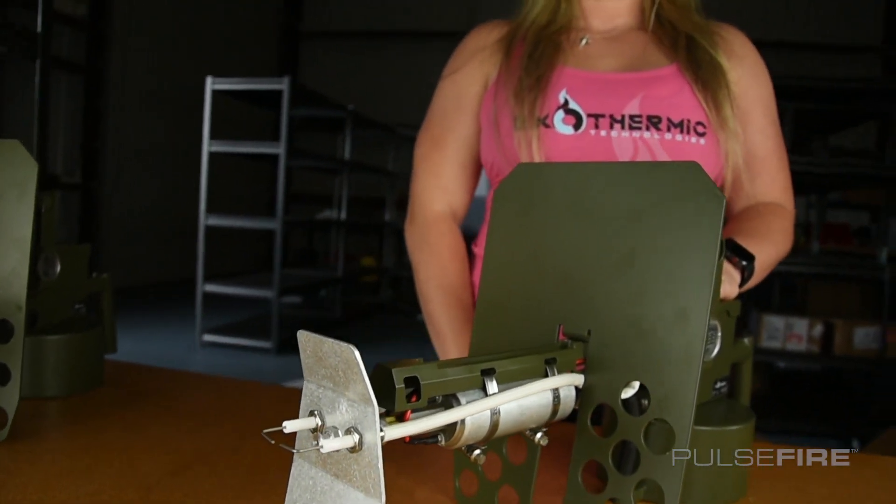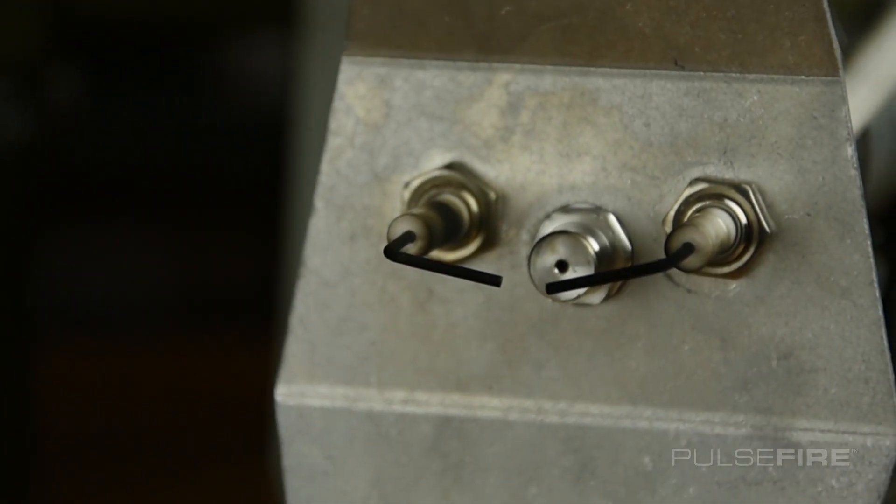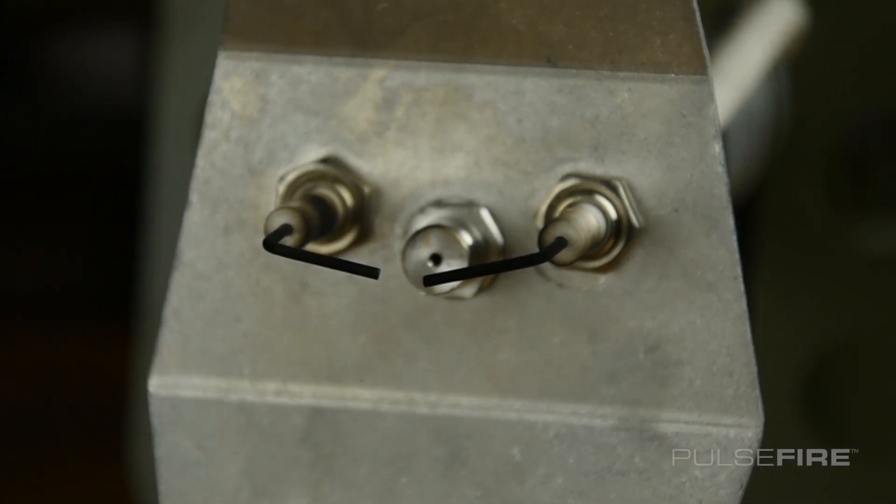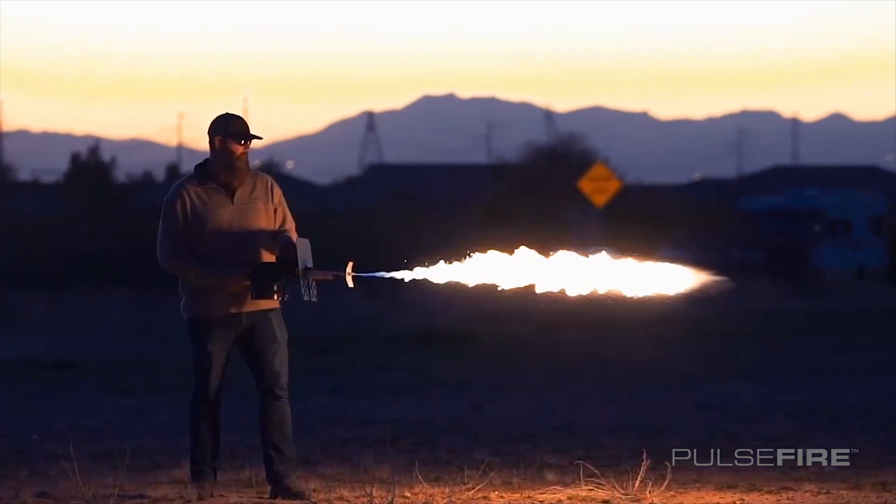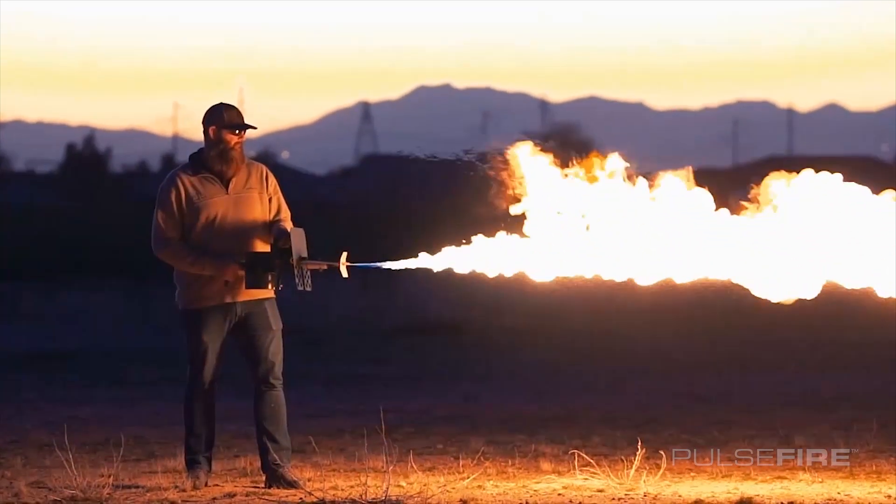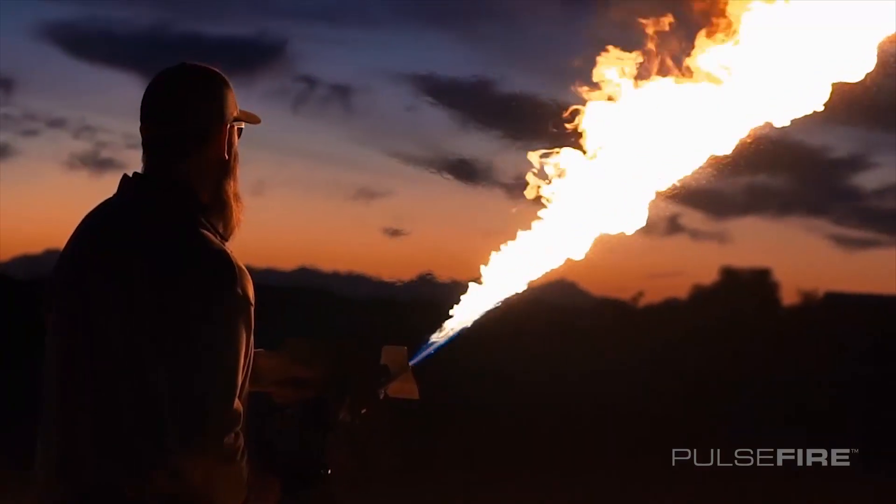We get the electrode positions close from the factory, but there's an optimal position that's impossible to confirm without running fuel through it. If you're experiencing unreliable ignition or reduced flame distance, your electrodes may need adjustment.